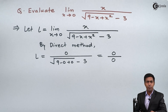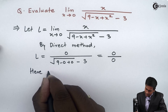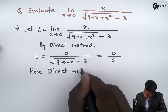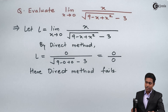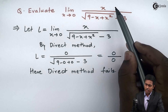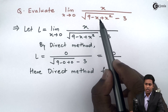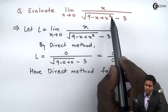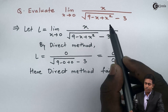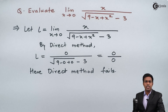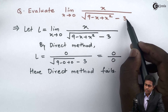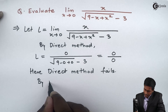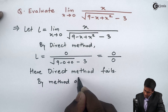Whenever we get 0 upon 0 by the direct method, we say the direct method fails. When the direct method fails, we look for some other method. Observing the given function again: in the denominator we have a square root and the second term 3 with a negative sign in between. To remove this square root, we can apply the method of rationalization, multiplying numerator and denominator by the conjugate of that term.